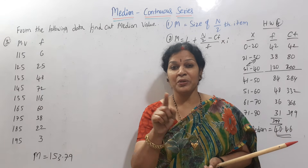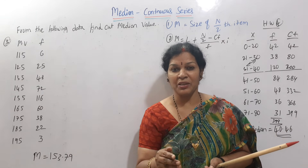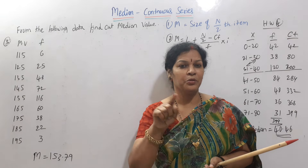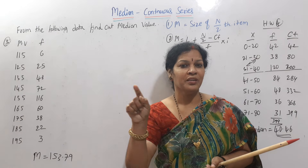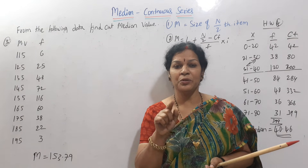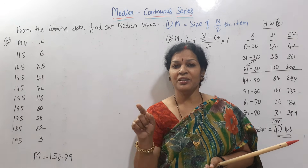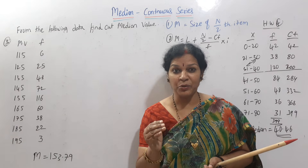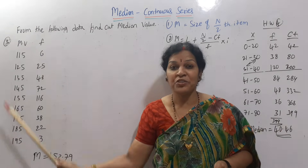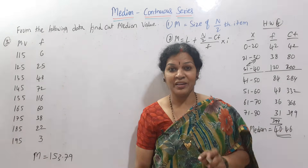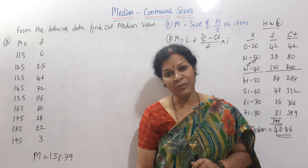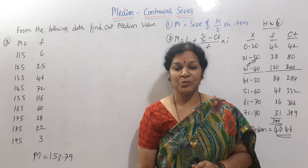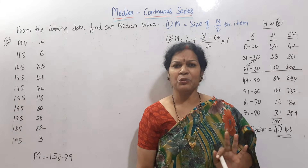You will see 10 to 20, 20 to 30, and the class interval. You will see the mid value. 10 to 20 means 15 is the mid value. 20 to 30 means 25 is the mid value. In this case we will show the mid value and the class interval. This is the first twist.